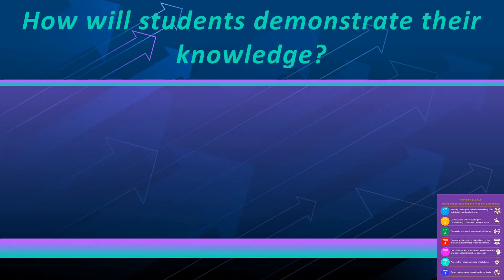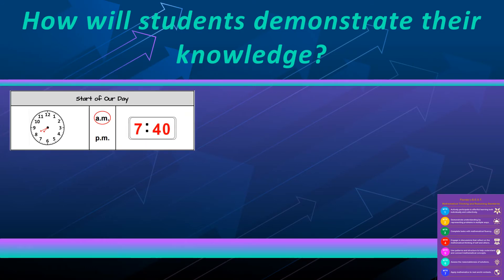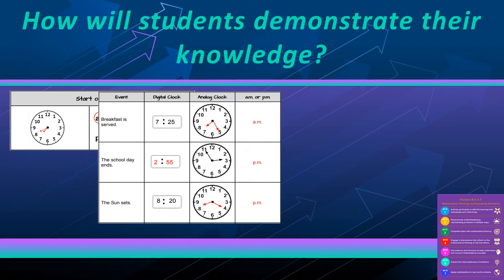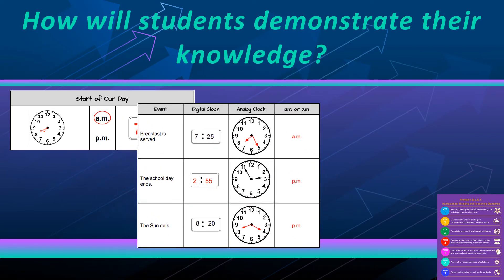At the beginning of the unit, students will be working more with telling time to the minute, representing it on analog and digital clocks, and determining AM or PM on these times. You can see there are different events that occur throughout the day where the student will demonstrate their knowledge by drawing the hands on the analog clock or writing on the digital clock, and then writing AM or PM.